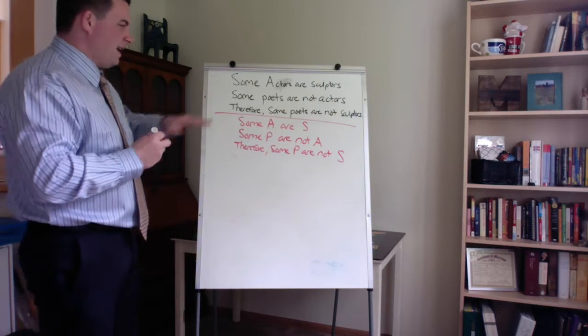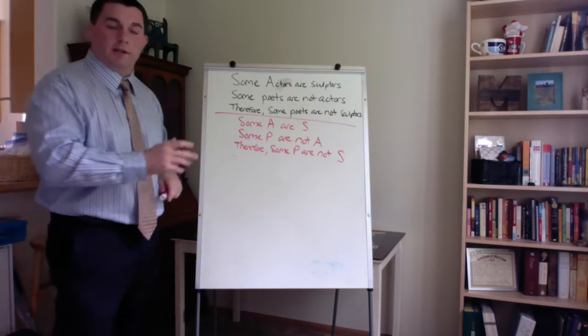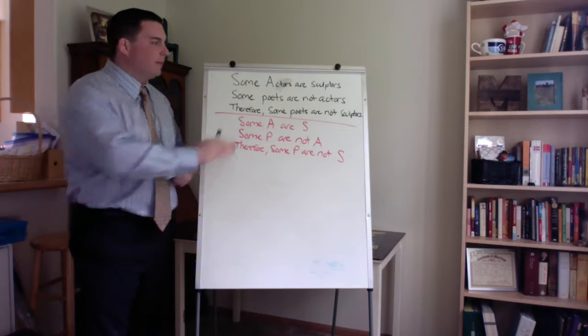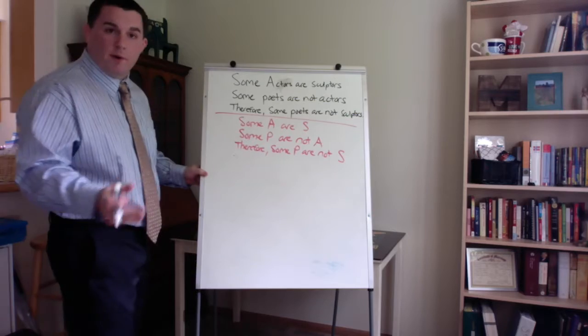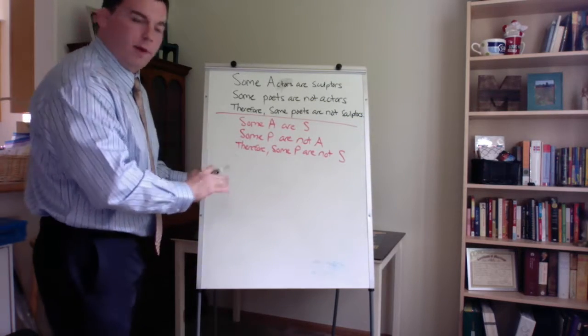Okay, again, that makes it a little bit easier to look at the form of the argument, getting the words out of the way. So let's go ahead and let's do a Venn diagram here, then we can check this out.